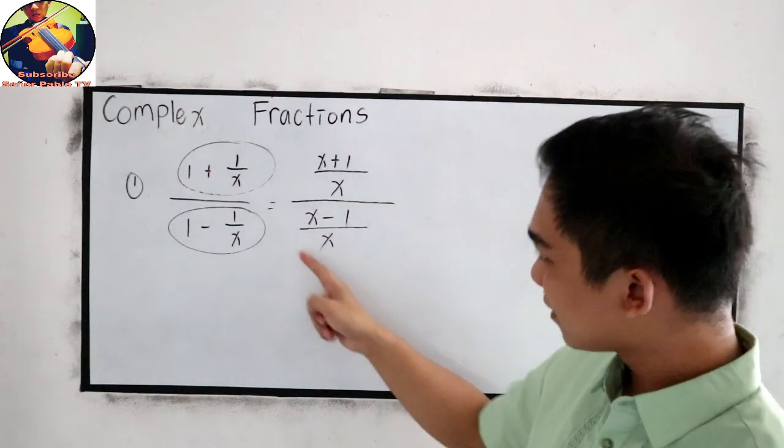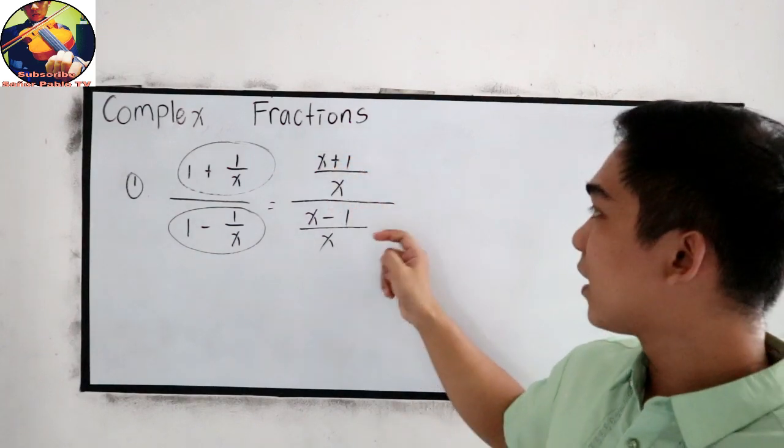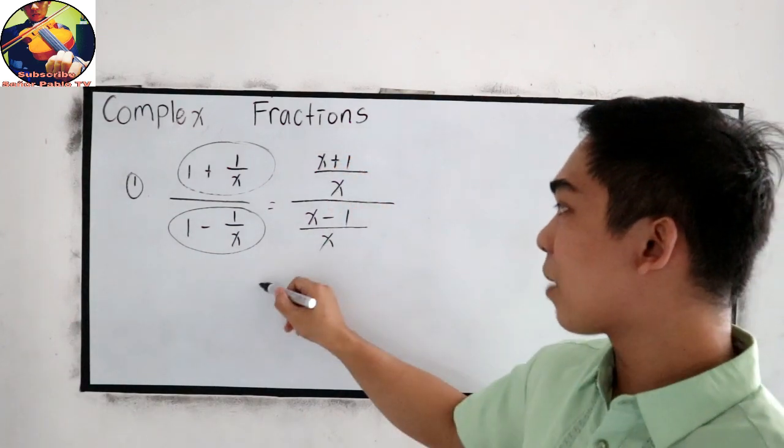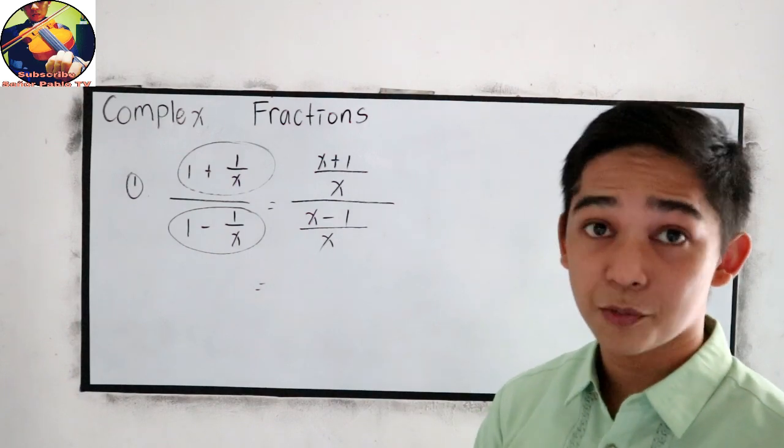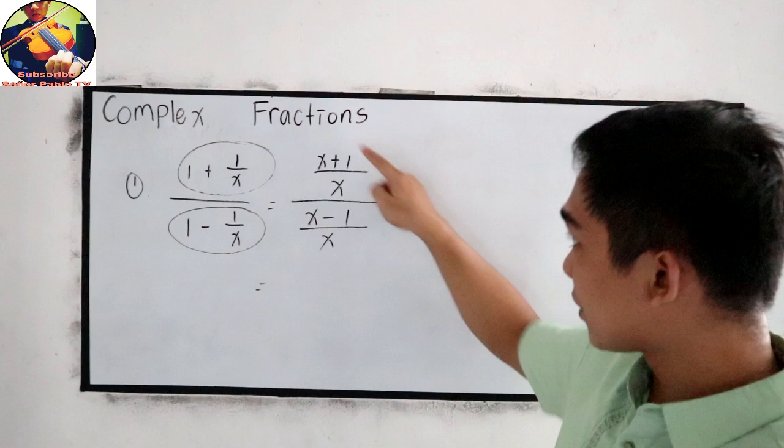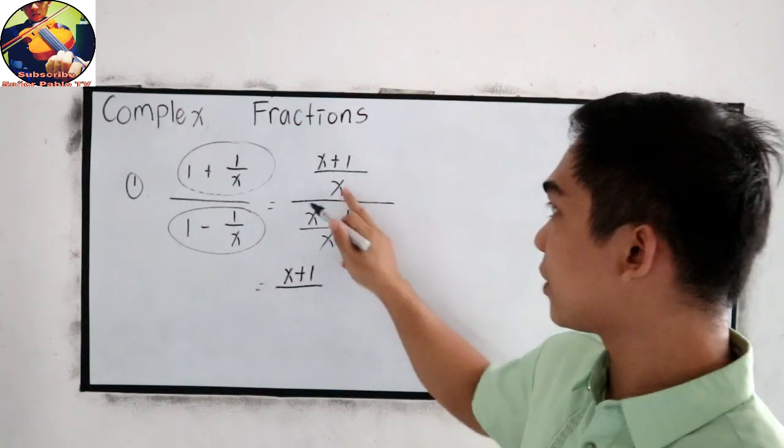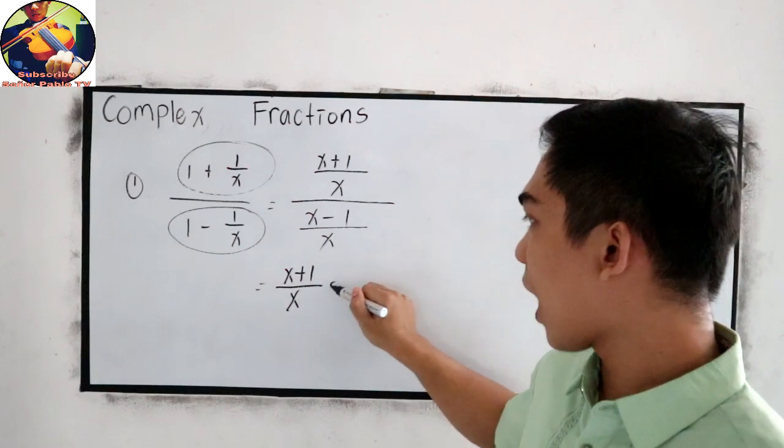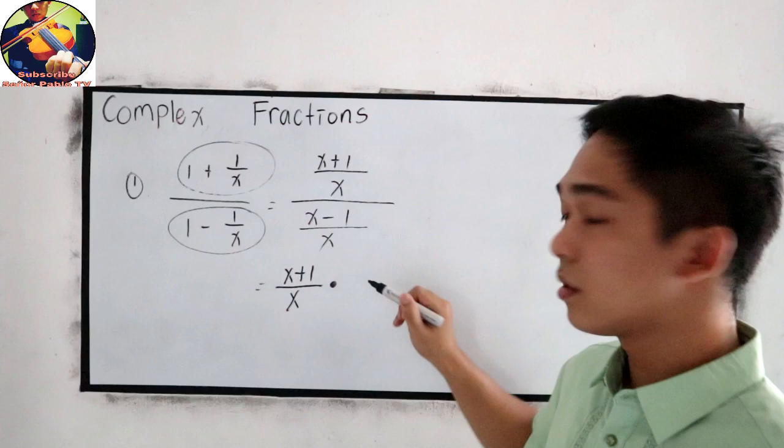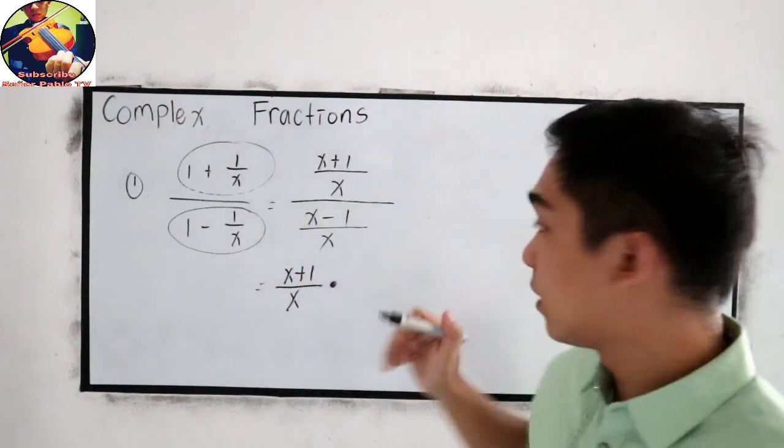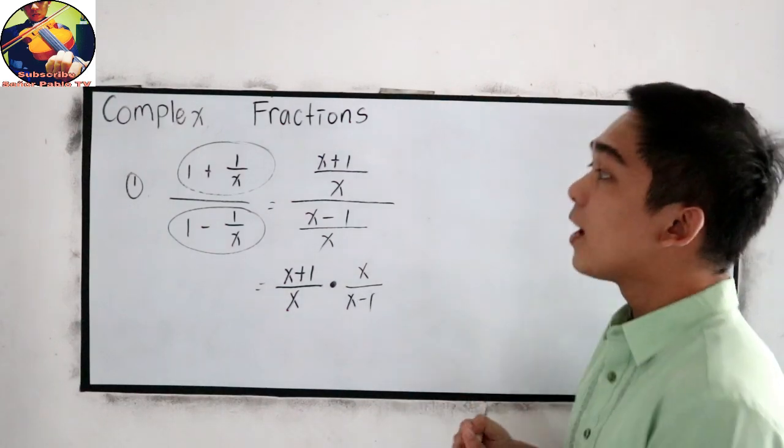Now notice that we have a single term in our numerator and our denominator. So apply the rules in division of rational expression. Copy our numerator, x plus 1 over x times, copy the denominator, then reciprocal.